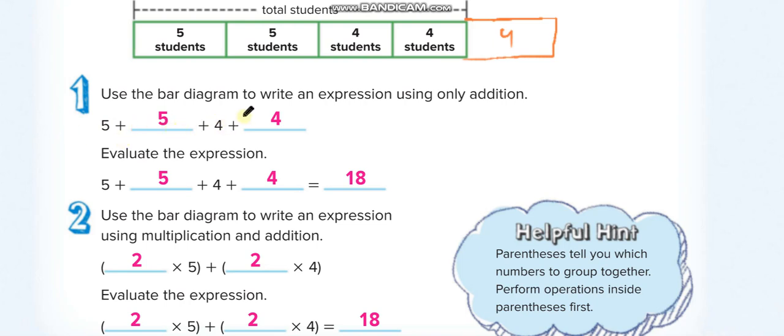So again we can use the first way like this: we add all of them. 5 plus 5 plus 4 plus 4 equals 18. The second way we can use multiplication also. So we can solve in addition way—the first one simply addition. And then the second way in multiplication way: 2 times 5 and 2 times 4. 2 times 5 is 10, 2 times 4 is 8, 10 plus 8 is 18. In both ways we get the same answer.